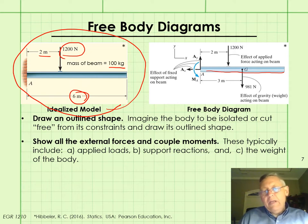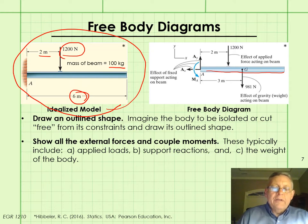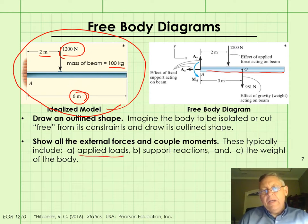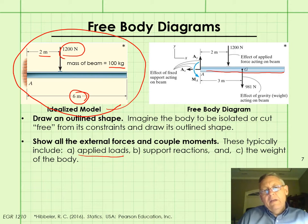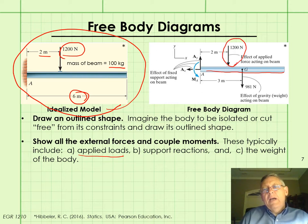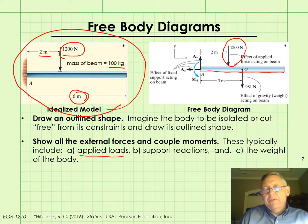Next, we populate that representation of the cutaway beam with all the external forces and couple moments acting on it. We can first look at all the applied loads: the 1200 newton force acting vertically downward, two meters from the connection point, is our only applied load — but we could have several or many more. We would show them one at a time and populate the diagram with those.